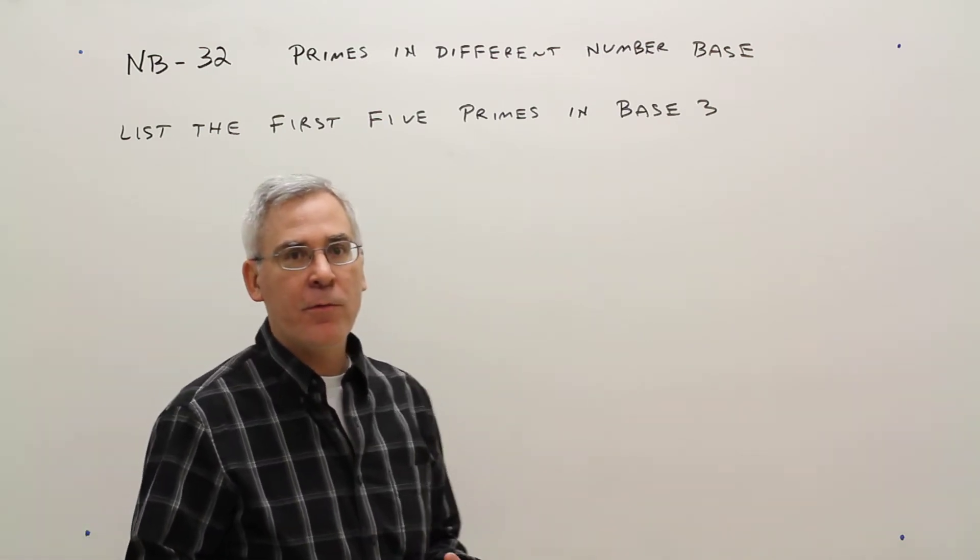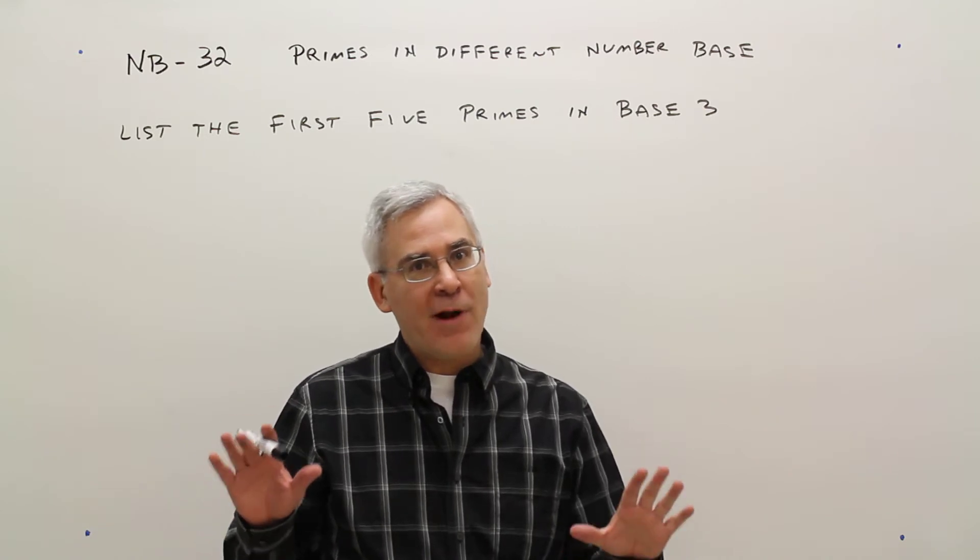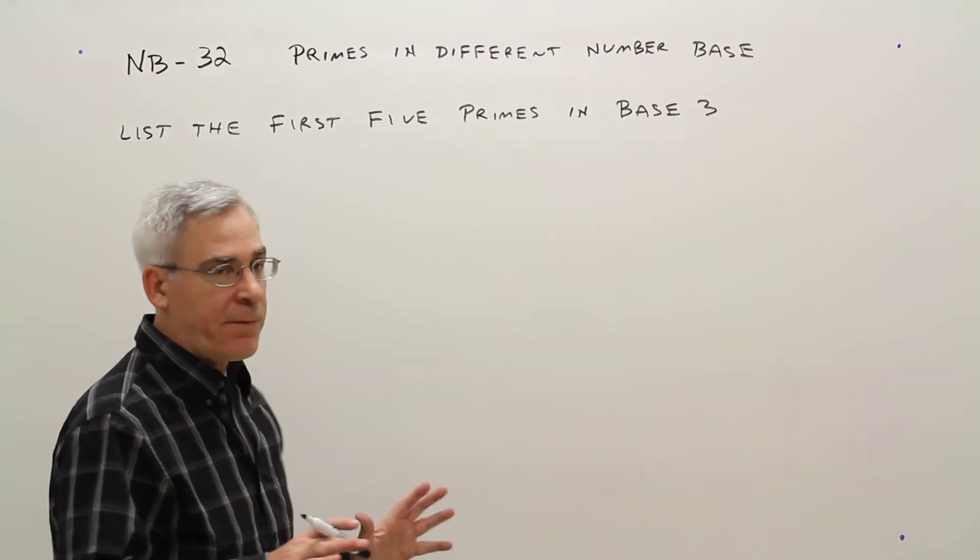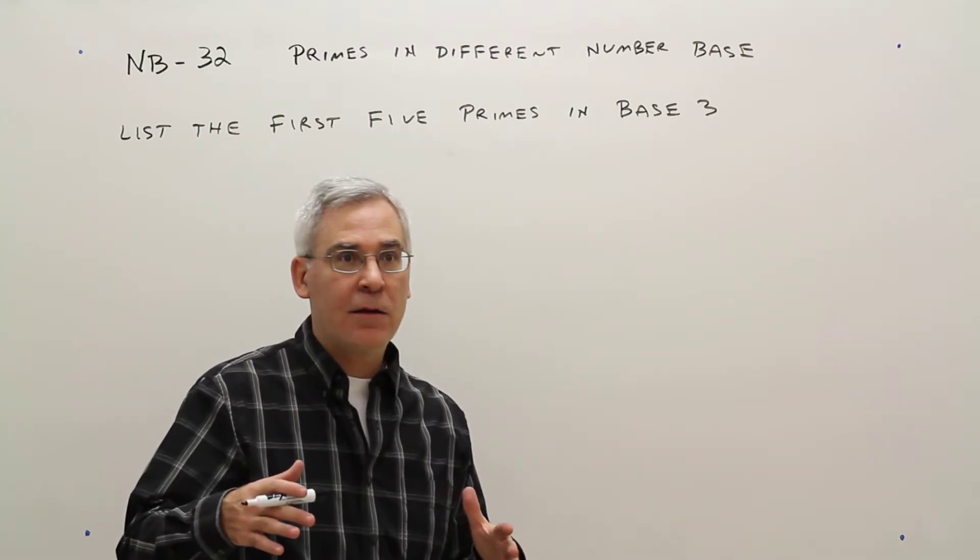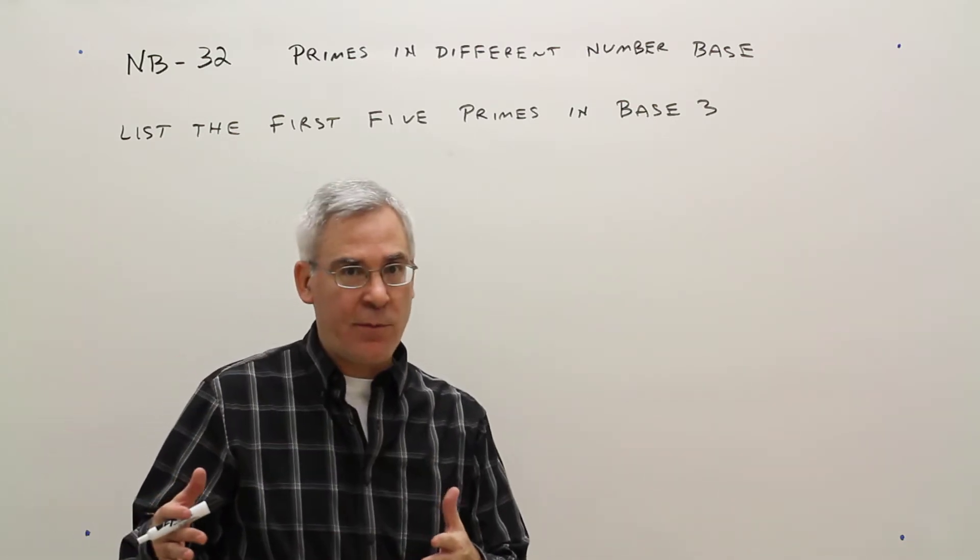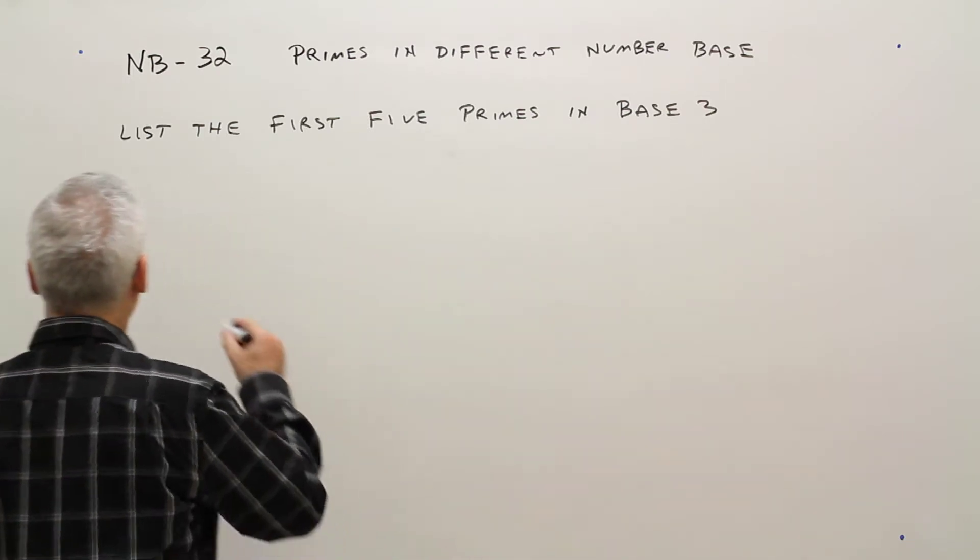Alright, so primes are primes are primes. What I'm going to do is list the first five primes in base 10 and then just convert those to base 3. I think that's the easiest way to solve this type of problem. So base 10...